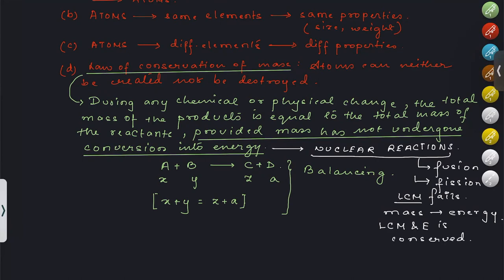According to Einstein's equation E = mc², mass and energy are two forms of the same thing — mass can be converted into energy and energy into mass. So remember: the Law of Conservation of Mass will fail in case of nuclear reactions, but the Law of Conservation of Energy remains conserved.